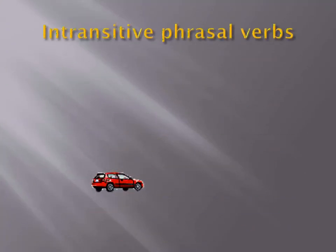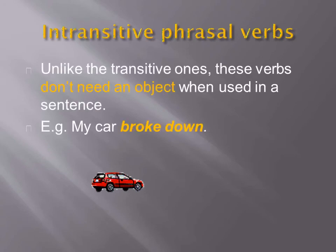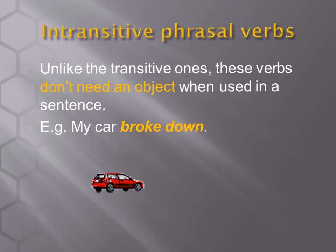Intransitive phrasal verbs: unlike the transitive ones, these verbs don't need an object when used in a sentence. For example: my car broke down.